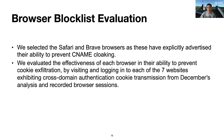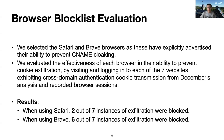We also did browser block list evaluation. We selected Safari and Brave browsers as they have advertised their ability to prevent synonym cloaking. We evaluated their effectiveness in preventing cookie exfiltration by visiting and logging into each of the seven websites exhibiting cross-domain authentication cookie transmission from December's analysis and recorded browser sessions. The results show that when using Safari, two out of seven instances of exfiltration were blocked. However, when using Brave, six out of seven instances of exfiltration were blocked.